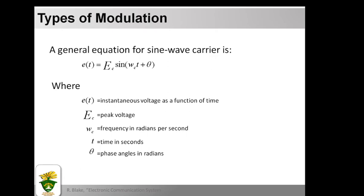In mathematics, working in radians per second when dealing with modulation makes the equations simpler. Frequency is given in Hertz, and to convert frequency to radians we use the formula: omega equals 2 pi f. The modulation is done in the transmitter, and the inverse — demodulation — takes place at the receiver to restore the original signal.